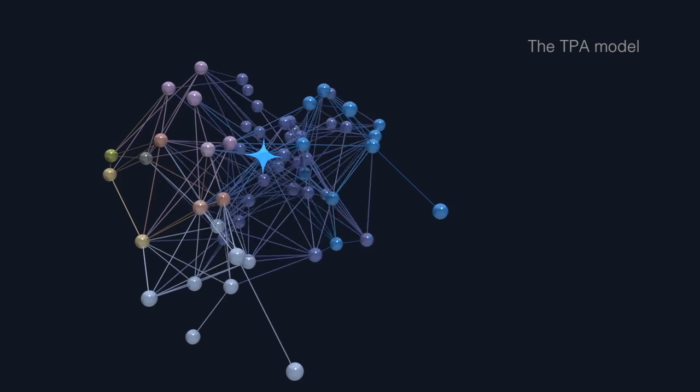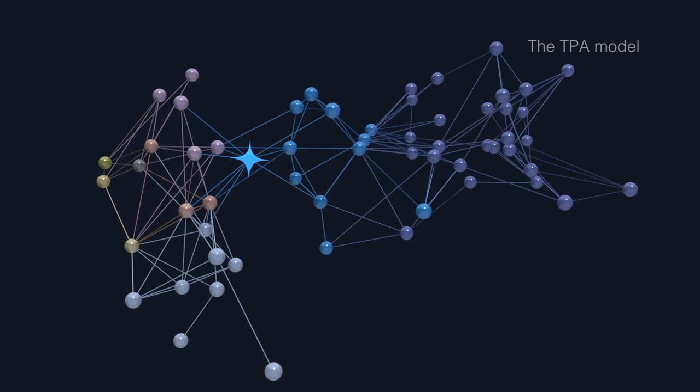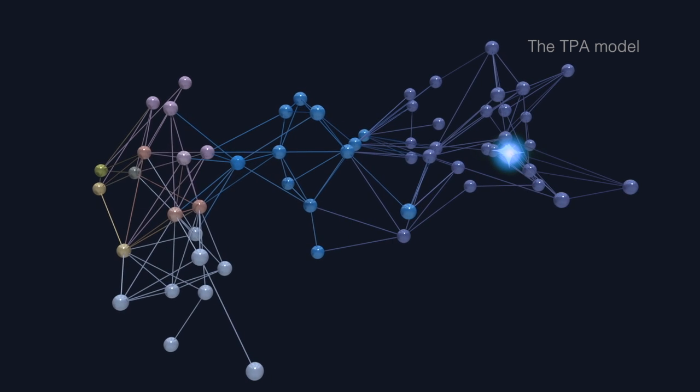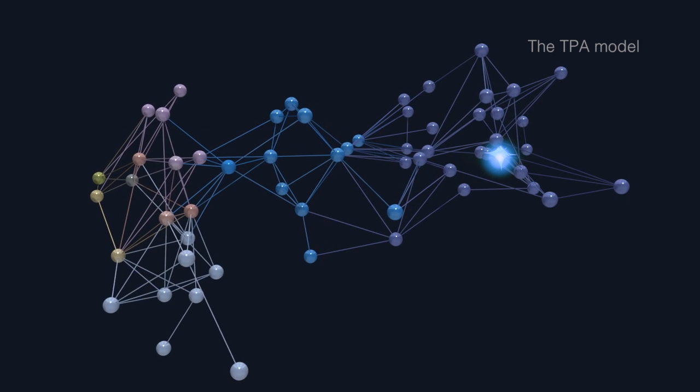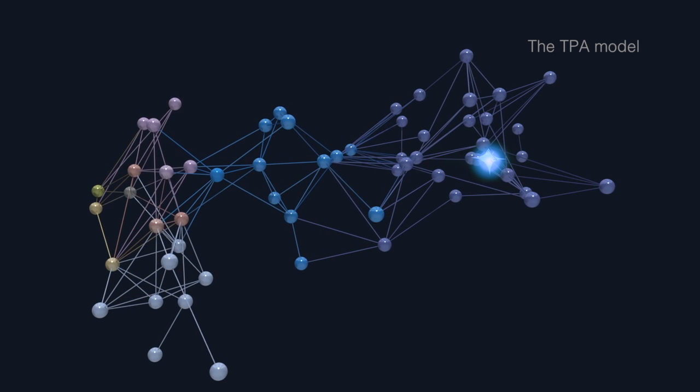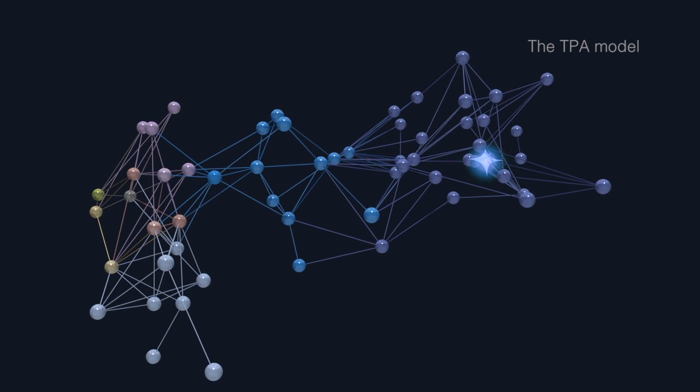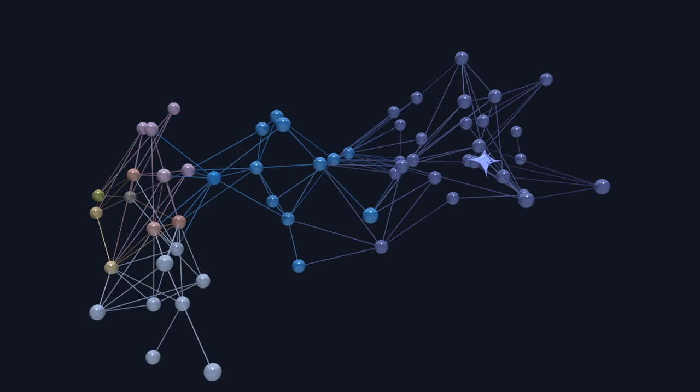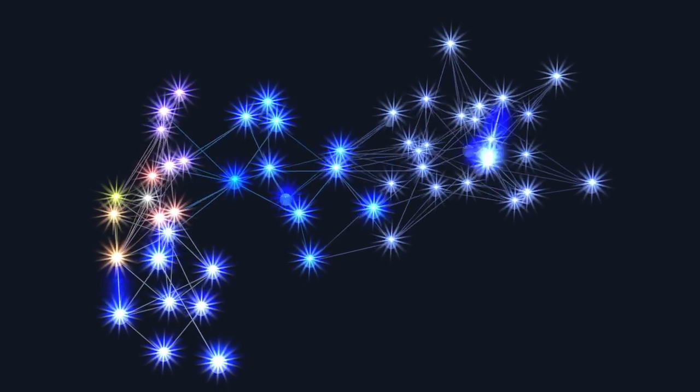In each iteration, new groups of vertices join the network. As time passes, the degree of the newly joined vertices suppresses the degree of the previously joined, and new network stars emerge. Our model more closely represents real-world data in fast-growing networks than previous models, and it helps in better understanding how network stars rise and fall.